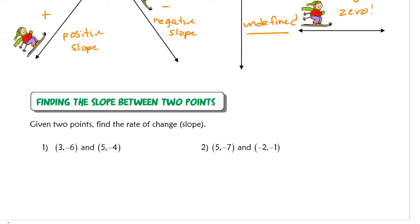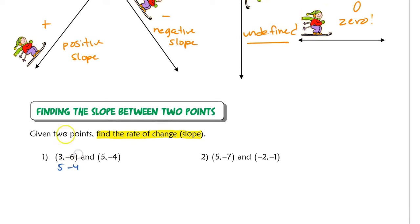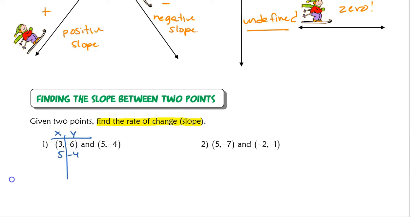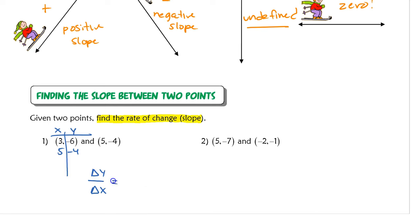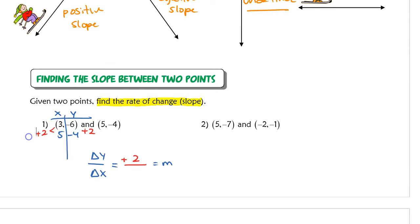The last part of the lesson is finding the slope between two points. Given two points, we can find the rate of change, which is the same as slope. Even though the points are listed as coordinates instead of in a table, we handle it the same way — rewrite them almost like an x-y table. Looking at the change in y over change in x: the x values go from negative 6 to negative 4, an increase of 2; the y values go from 3 to 5, also an increase of 2. So change in y over change in x is 2 over 2, which simplifies to 1.